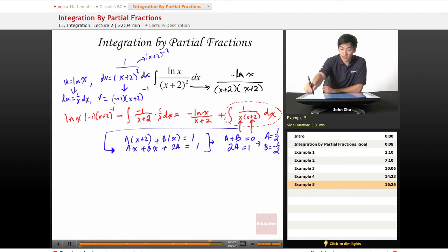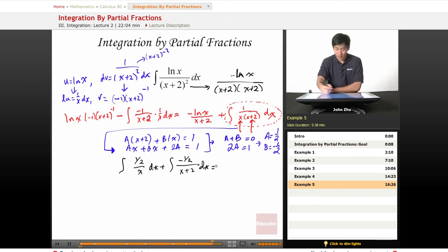So applying this back to our original form, we get integral of a, which is 1 half, over x dx plus negative 1 half b over our (x + 2) term dx. And we solve this integral just like before.